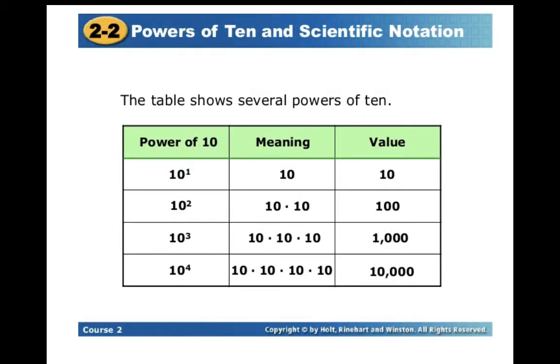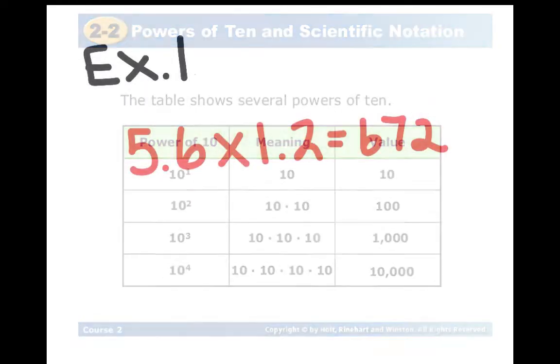Powers of 10. 10 to the first power is 10. 10 to the second power is 100. Those are powers of 10. When we're multiplying or dividing by powers of 10, we're simply just moving the decimal point.